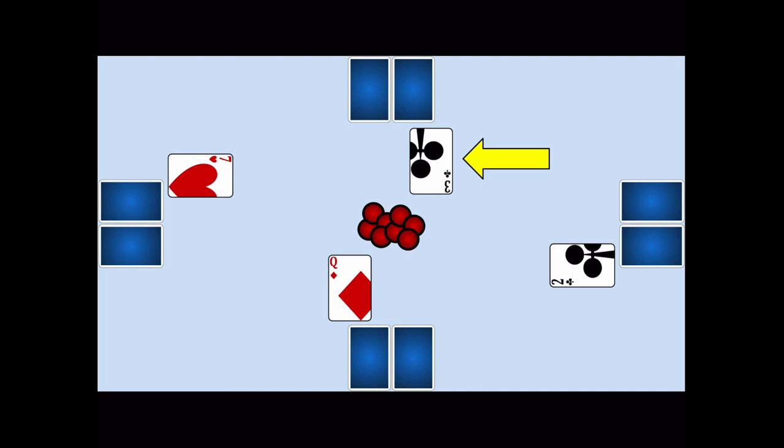If the player raises, each opponent may meet the bet or fold. If the player checks, the next player has the option to check or raise and so on around the table.